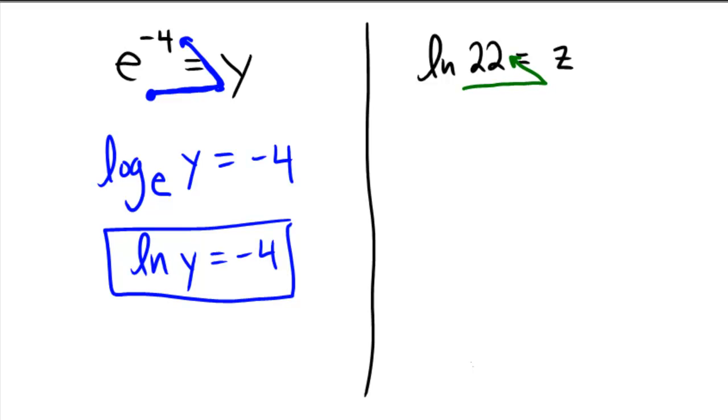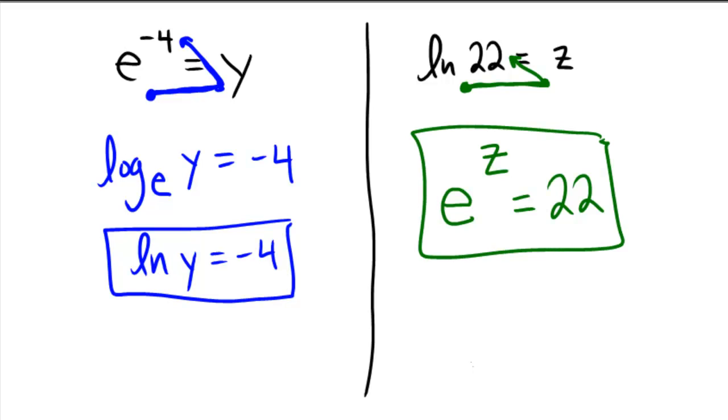Then we have ln of 22 equals z. So when we change that into its exponential form, we start at the base, which for natural logarithm we understand the base is an e. Raise that to the power of z, and that must be equal to the number 22. So this one becomes e to the z equals 22.